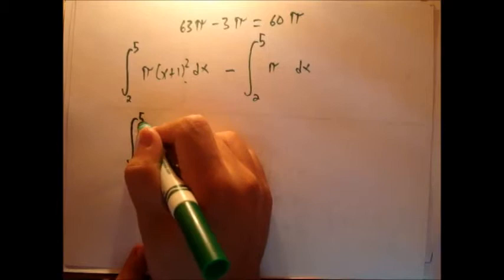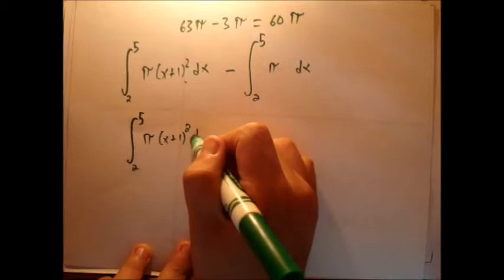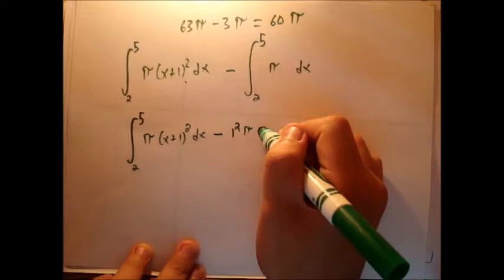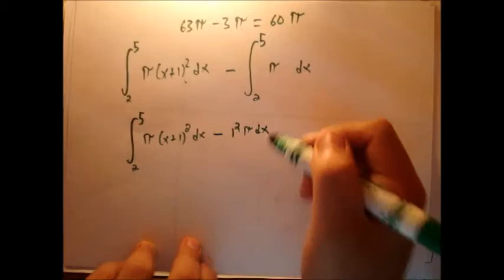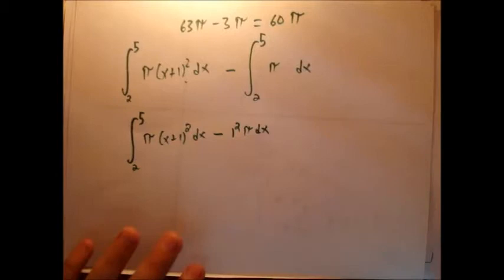2 to 5, we're joining integrals, pi x plus 1 squared dx, and here there should be a minus 1 squared, minus 1 squared pi. Yes, the dx should be placed into one side. I'll do that right now. pi x plus 1 squared dx minus 1 squared pi dx. I'm going to factor out the dx and the pi.